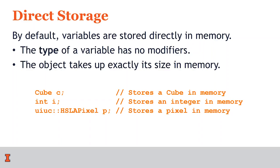By default, all variables are directly stored in memory. When we have direct storage in memory, the type of the variable has absolutely no modifier, and the object size in memory is exactly the size it takes up to store. For example, we saw many cubes stored in stack memory, many integers, and specialized classes like an HSL pixel you see in the assignments.